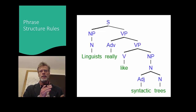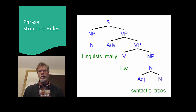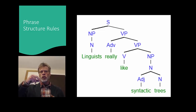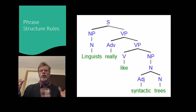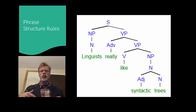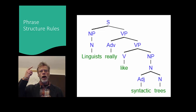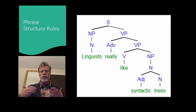When we look at sentences, they are ordered linearly, obviously, but underlyingly they're also ordered hierarchically. That's how we envision them in our minds, and we represent that hierarchical structure with trees. We also want to come up with phrase structure rules that can derive those trees — we're trying to model the mental grammar that speakers have for creating trees.